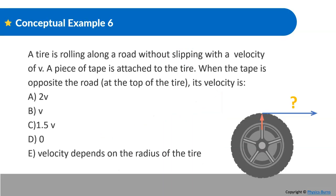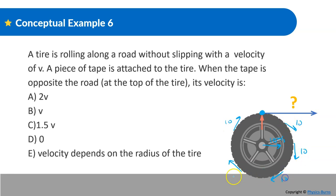Let's do some examples. A tire is rolling along the road without slipping with velocity V. A piece of tape is attached to the tire. When the tape is opposite the road at the top of the tire, its velocity is blank. So there's a piece of tape right at the top. Rolling without slipping — let's say this is going 10 meters per second. Every part on the outside has a tangential velocity of 10 meters per second. The tangential velocity at the top is also 10 meters per second.